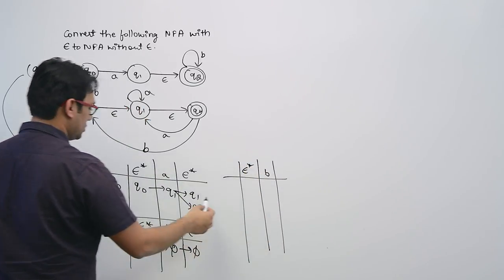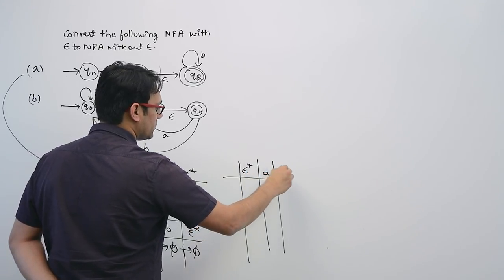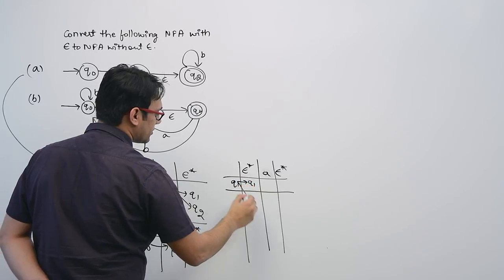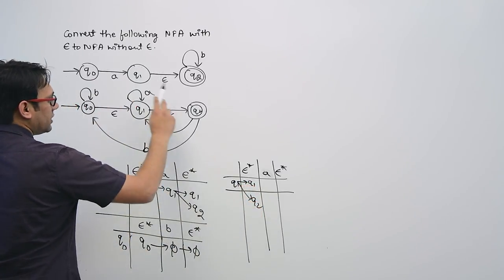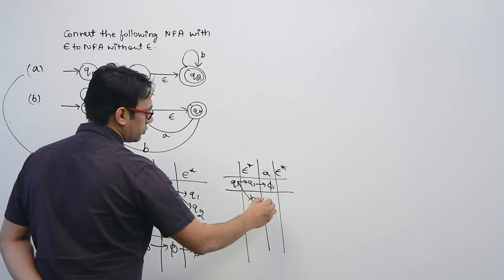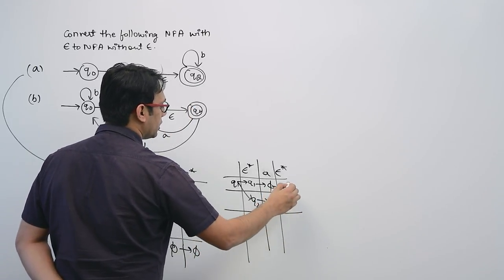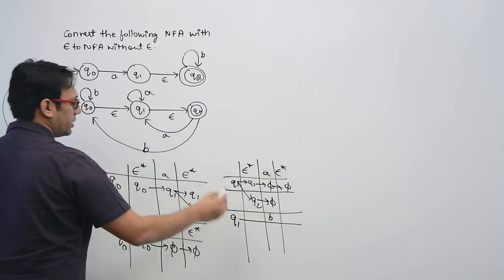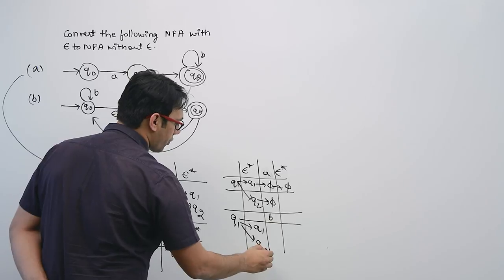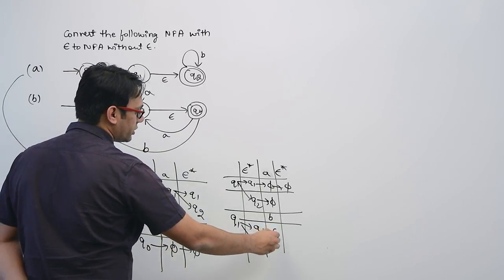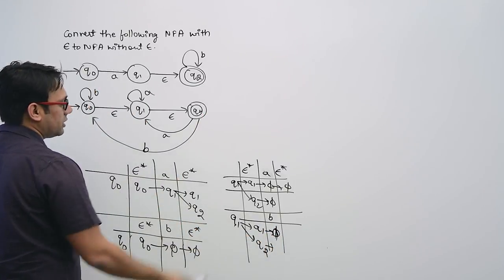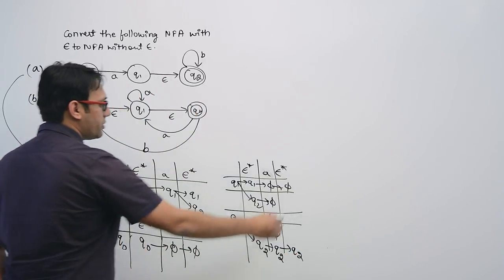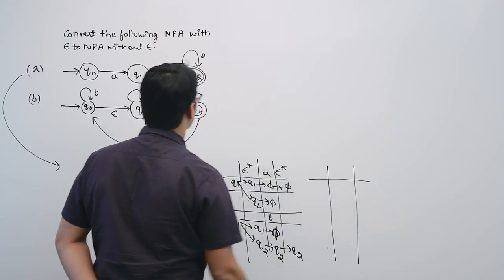For state Q1 with symbol A: the epsilon closure of Q1 is Q1 as well as Q2. If you are seeing symbol A on Q1, you are not going anywhere. If you are seeing symbol A on Q2, you are not going anywhere — therefore we get phi. For symbol B on Q1: we go to phi; on Q2 seeing symbol B, we go to Q2 itself, and epsilon closure of Q2 is Q2.